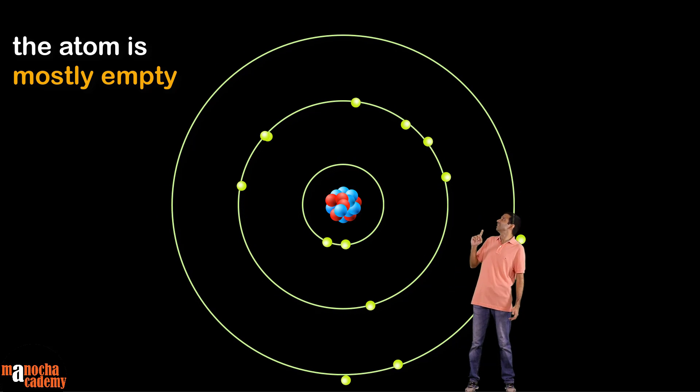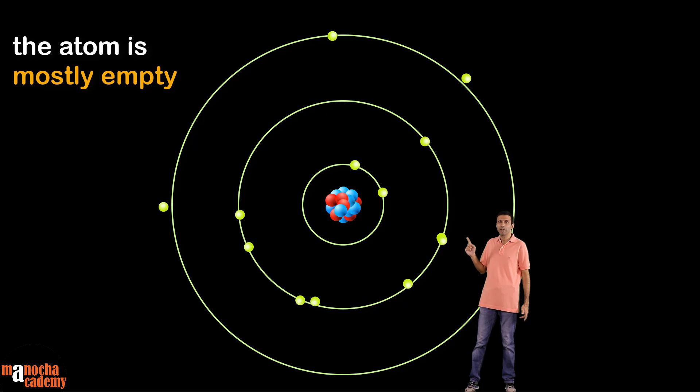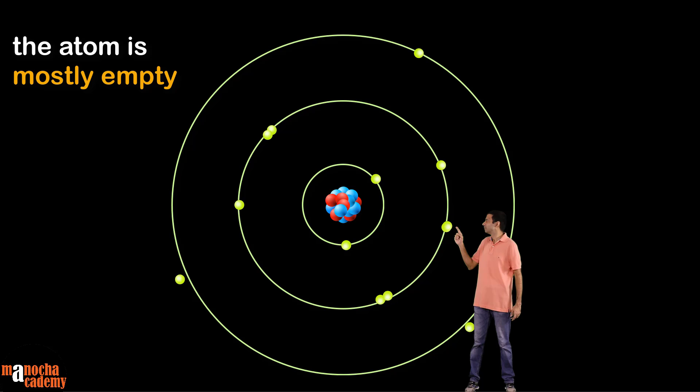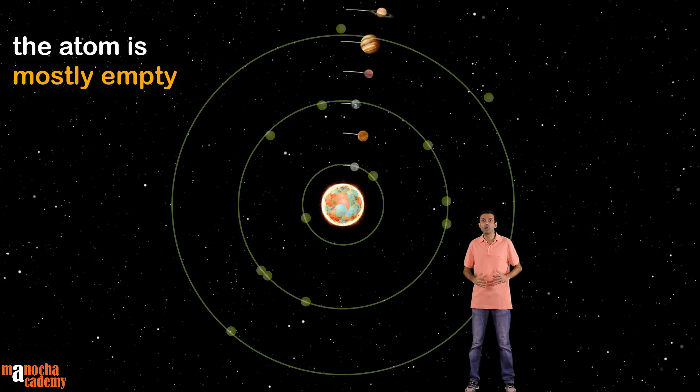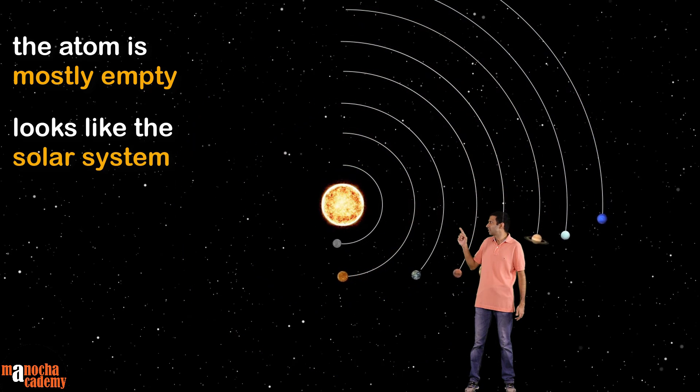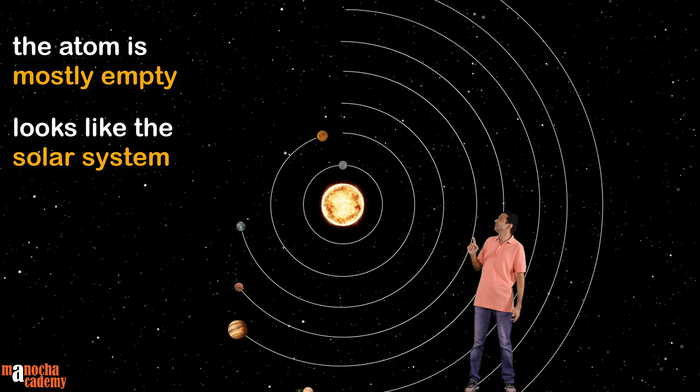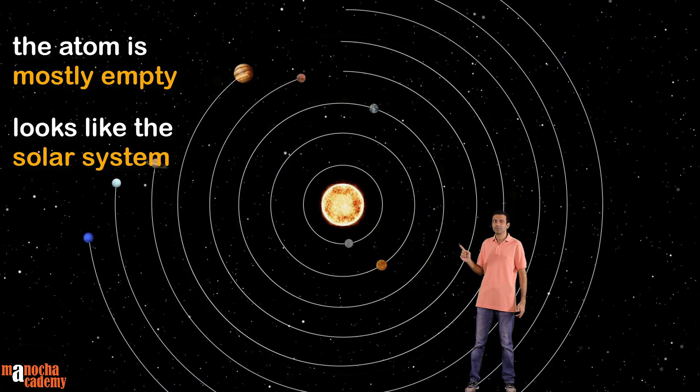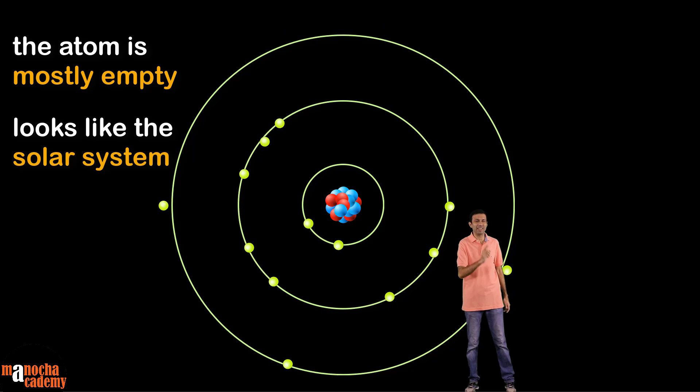Wait a minute, I can see some tiny particles spinning around here. There's also something in the center. This looks like a model of the solar system with the Sun in the center and the planets spinning around it. Now let's look at each part in detail.